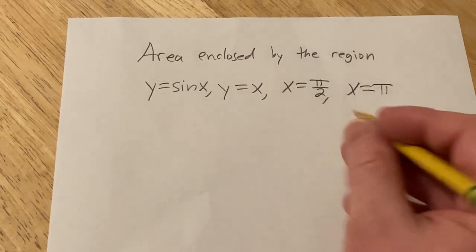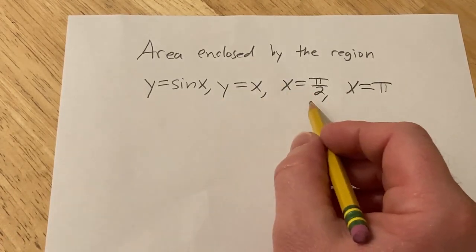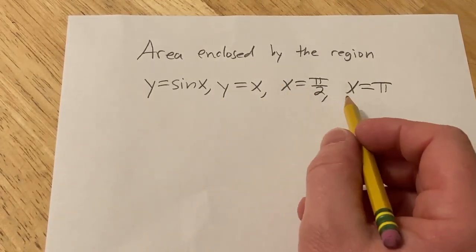Hi, in this video we're going to find the area enclosed by this region. We have y equals sine x, y equals x, x equals pi over 2, and x equals pi.